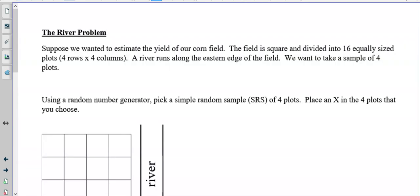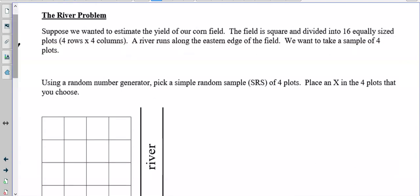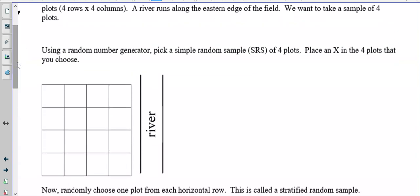So you can see how the way it's asked can affect the outcome. All right. So now we're to the river problem. Suppose we wanted to estimate the yield of our corn field. The field is square and divided into 16 equally sized plots, four by four rows and columns. A river runs along the eastern edge of the field. We want to take a sample of four plots. So using a random number generator, we're going to pick a sample of four plots. First off, we need to number them. So I'm going to number one, two, three, four. I'm not going to fill in every one. Obviously five, six, seven, eight, nine, ten, eleven, twelve, thirteen, fourteen, fifteen, sixteen. You get the gist.